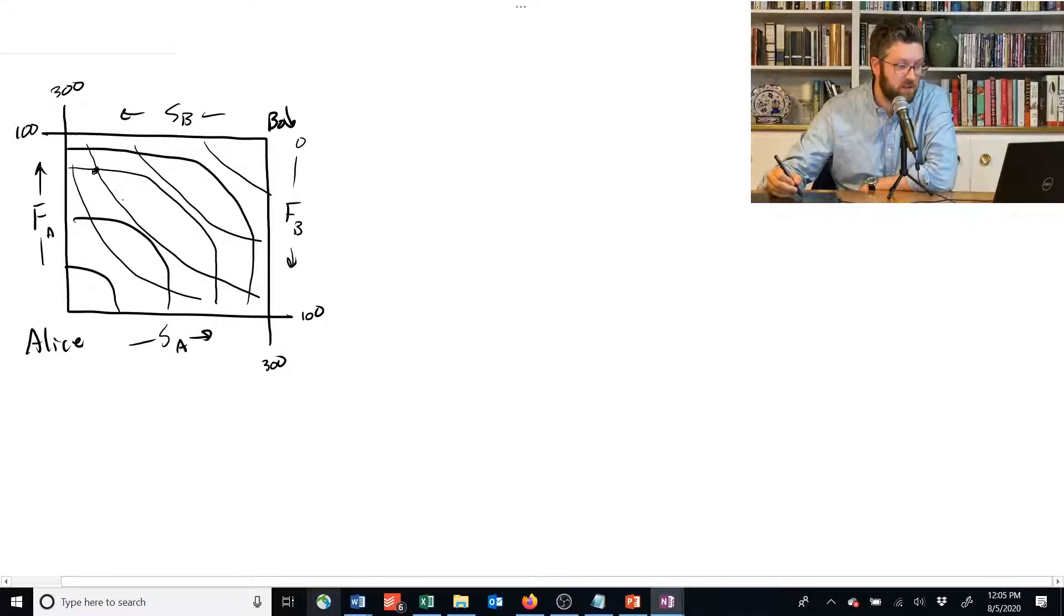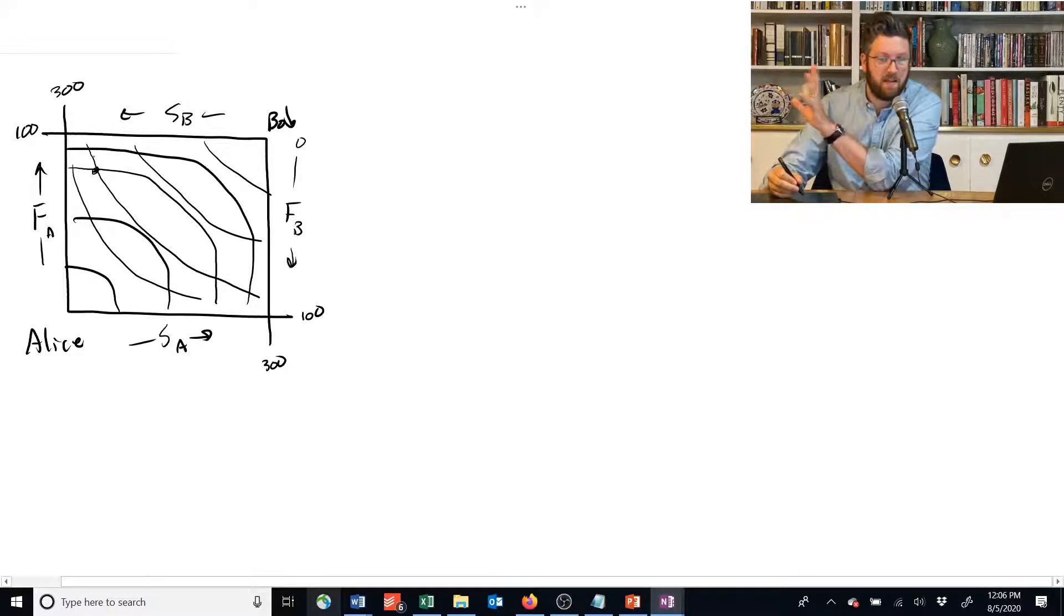This line here represents the indifference curve that Alice is on. If she can move to any allocation in this economy that is up and to the right of that indifference curve, she would prefer it.